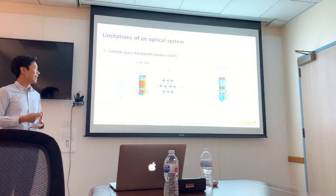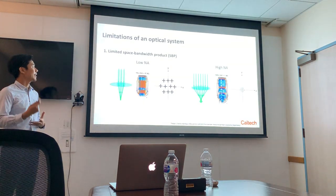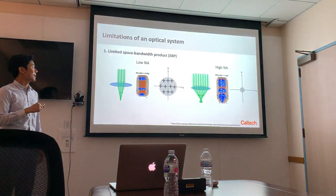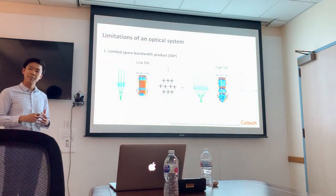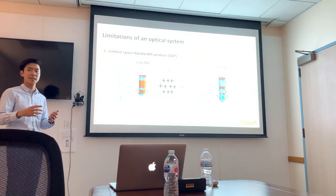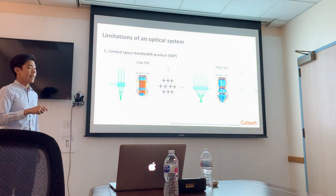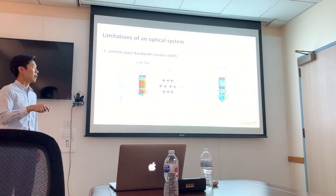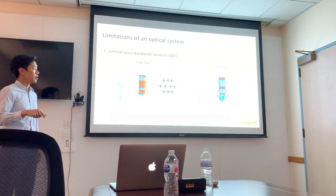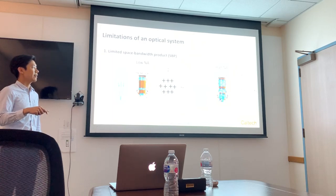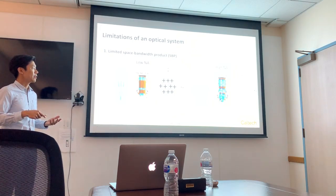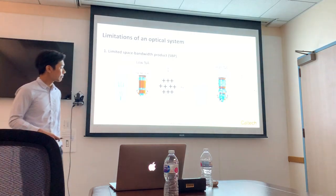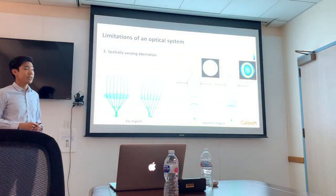Now we can quantify the limits of an imaging system. The first is the limited space-bandwidth product — basically, the total number of resolvable spots in a given field of view. For a low-NA objective, you have a less tight focus but can afford a big field of view. For a high-NA objective, you achieve tighter focus but at the expense of increasing aberration. Higher-NA objective lenses have a lot of optical elements to correct for aberration, but your field of view actually decreases, so the number of resolvable spots remains pretty much constant.